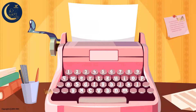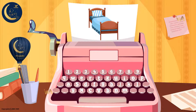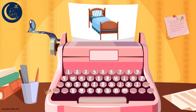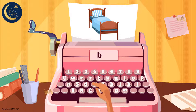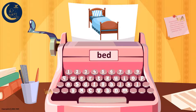Look at this one. Here is a bed. Let's spell the word bed together. The first sound is b. The second sound is e. The last sound is d. The word bed has the letters b, e, and d.